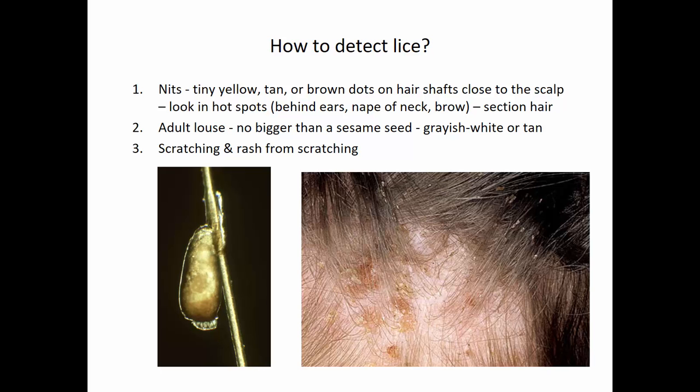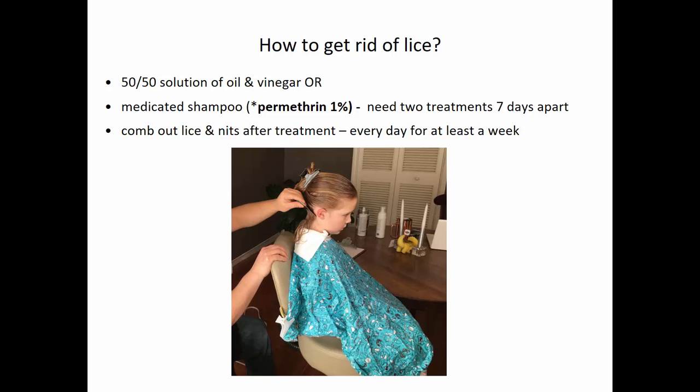If you detect lice, there are a couple of options. You can go to the drugstore and get a medicated shampoo, often permethrin at about 1%. Shampoo the hair with that, comb out lice and nits, then do a second treatment about seven days later in case there were eggs that hatched that the medication didn't kill.